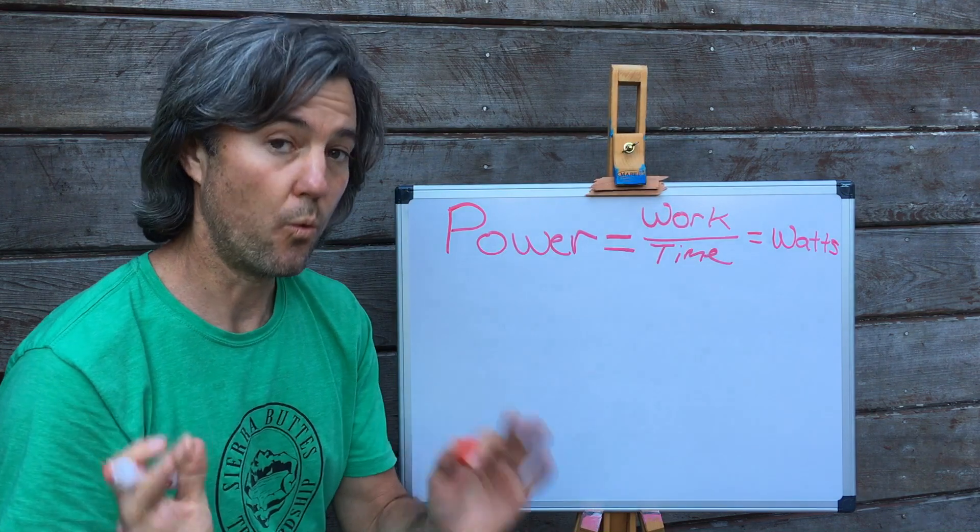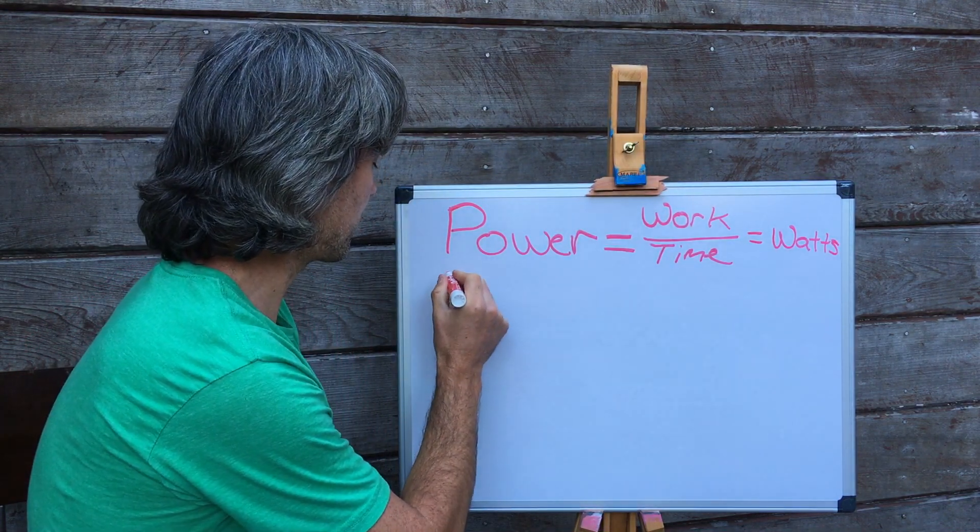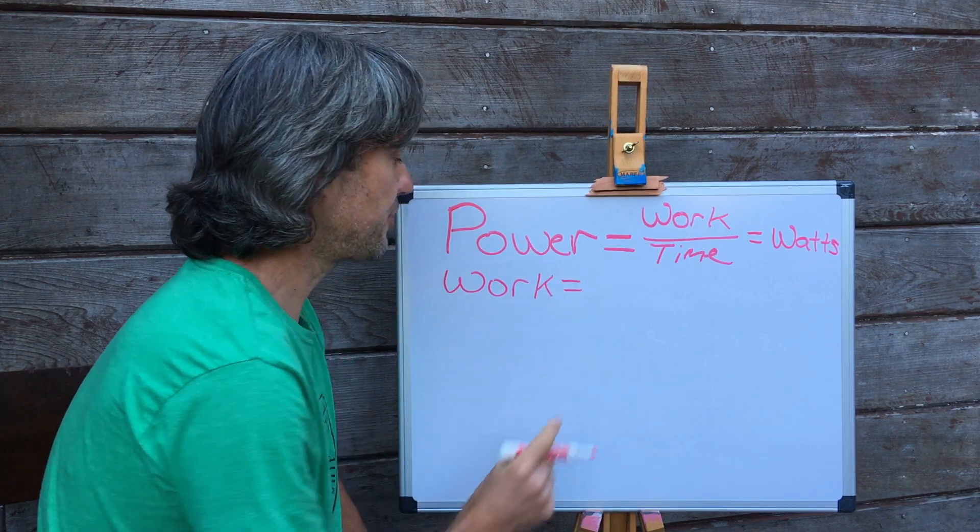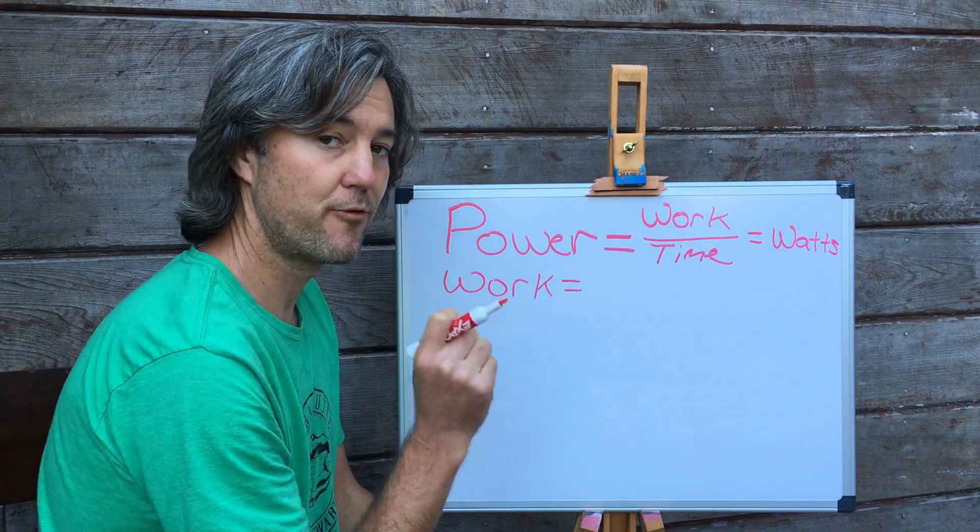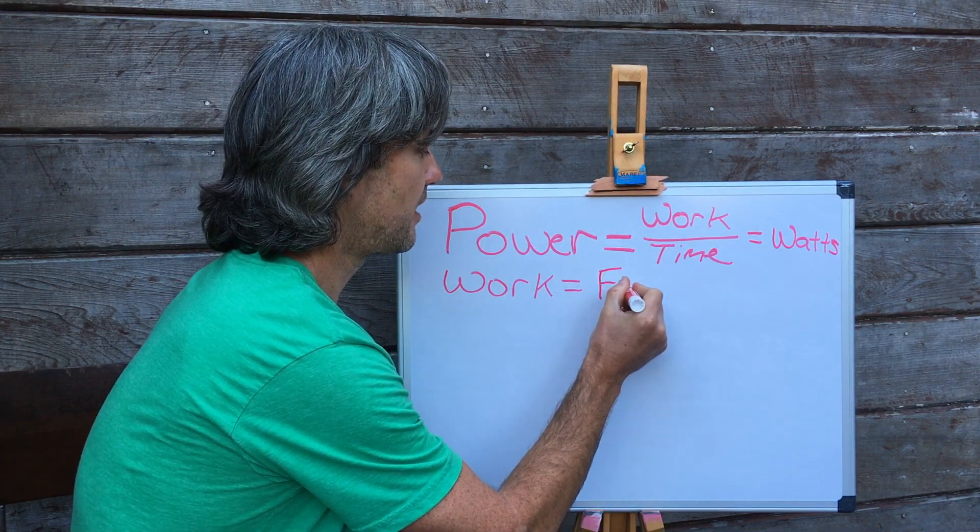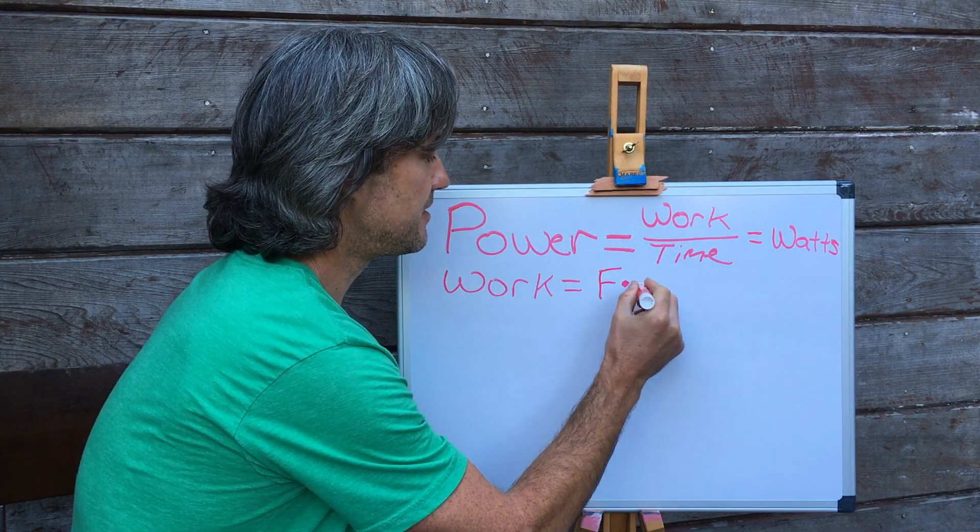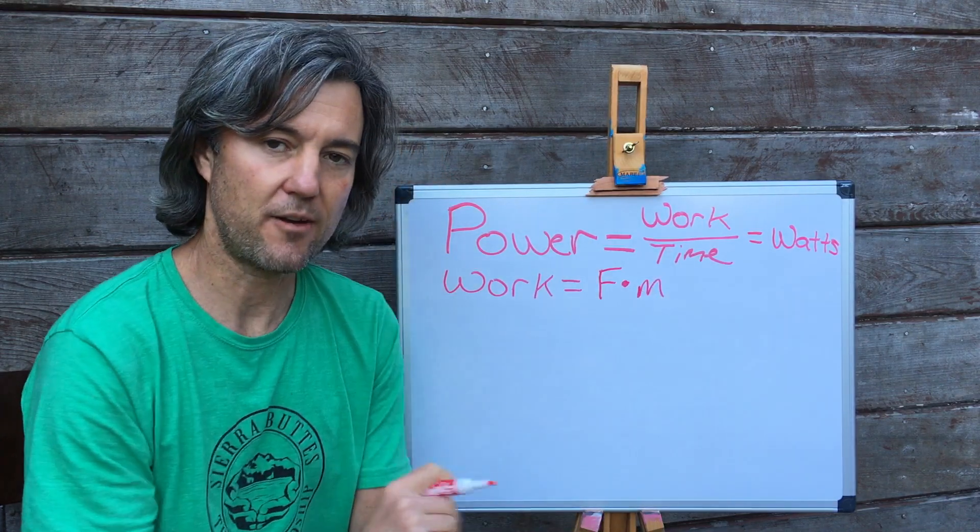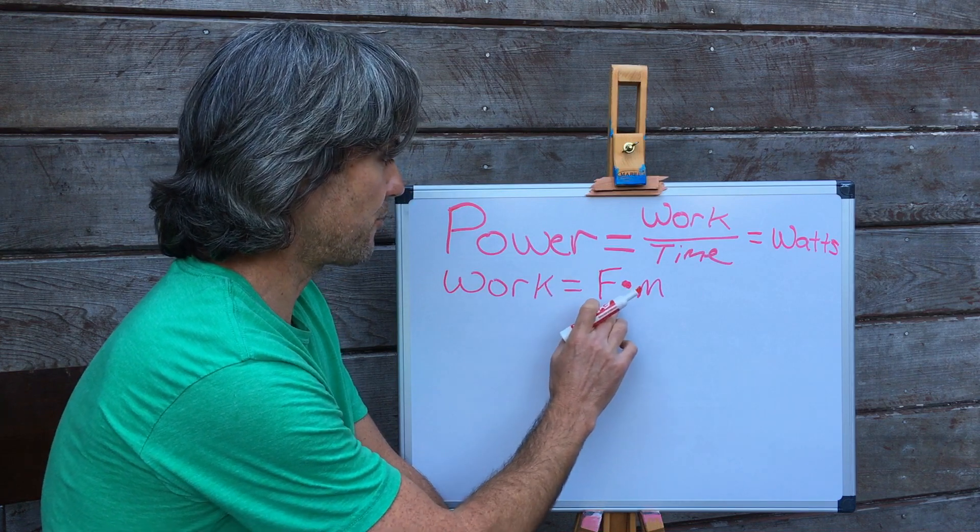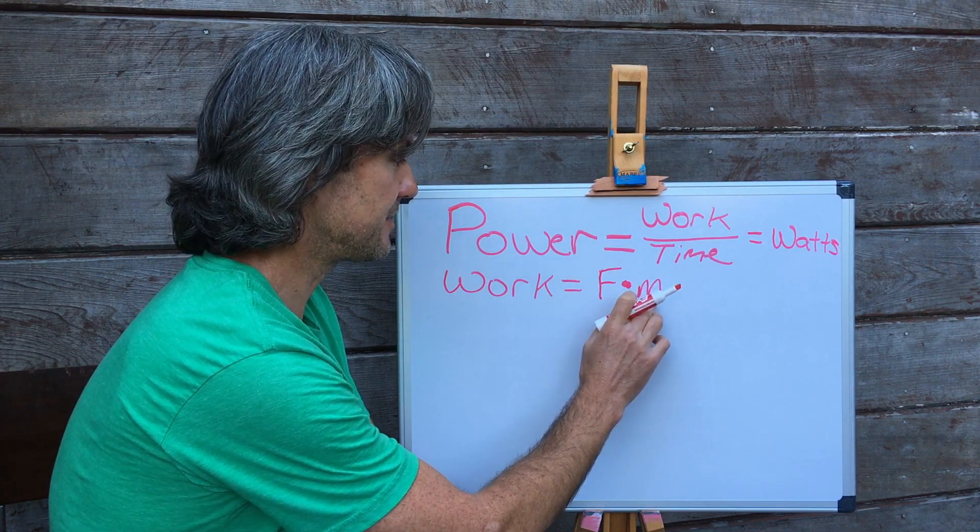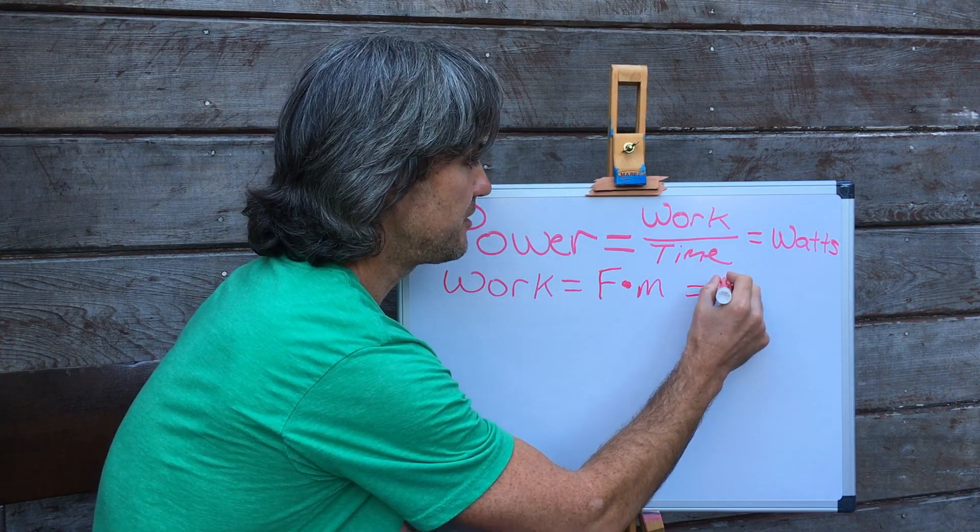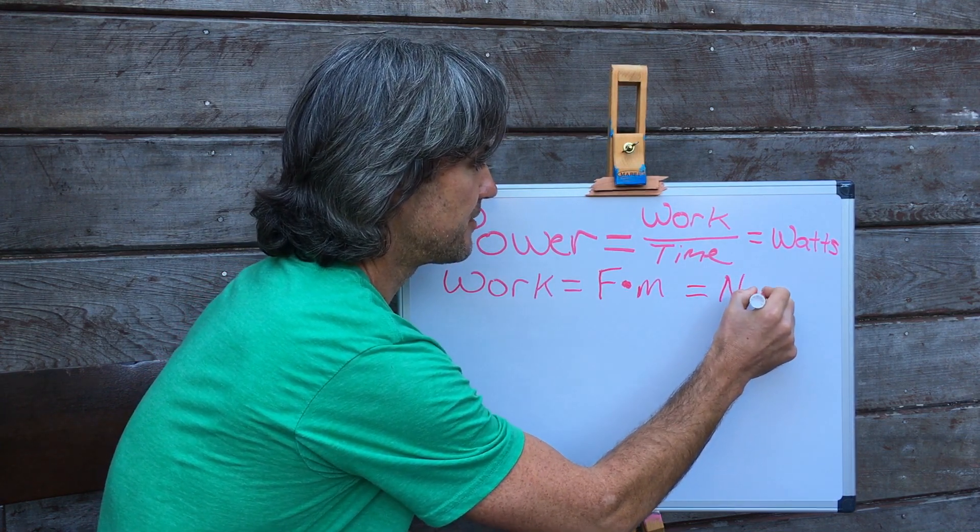Okay, so now that we know that power is equal to the amount of work we've done in a period of time, what is work? How do we define work? Work is equal to the amount of force that you've applied times the distance to which that force was applied. So if we look at this, the units for work are force times the distance, and that is equal to newtons times meters.